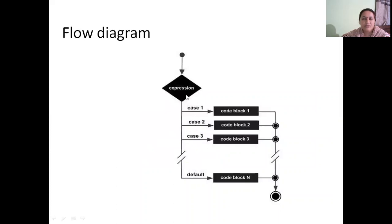This is the flow diagram of switch statement. The expression will be tested first and the value of the expression will be matched with case one. If it matches, code block one is executed and control will come out to this statement, skipping all other blocks.